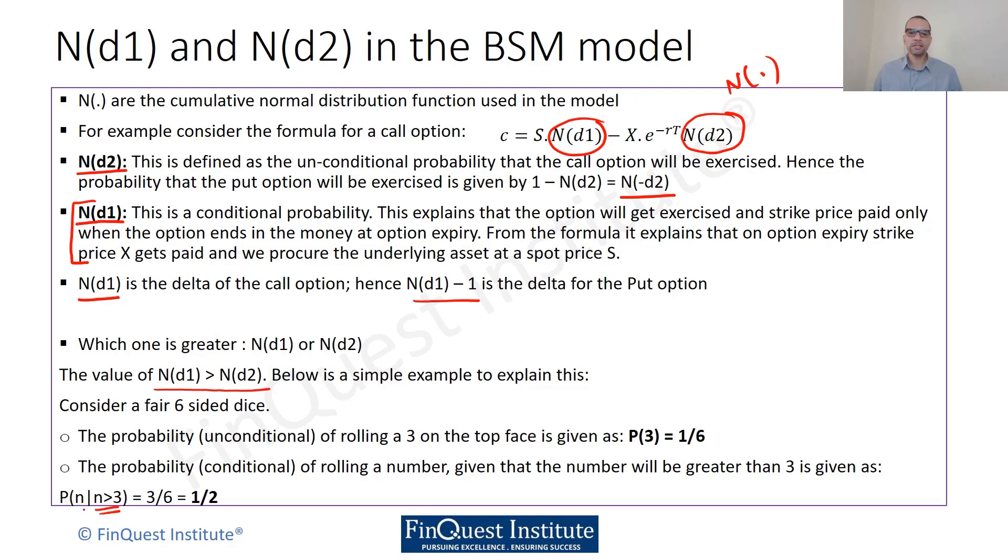We can imagine it is something similar to this. We are trying to figure out the probability such that the number will be greater than 3. In this case, our probability is 3/6 because now the first 3 outcomes are gone. 1, 2 and 3 is not possible. We either need a 4, 5 or 6 to come up on the face of the die. So we have 3/6 or 1/2. And that's why N(d1) will be greater than N(d2).